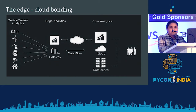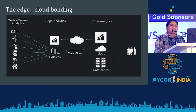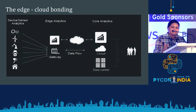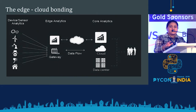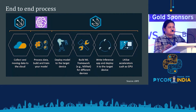Does edge computing make the cloud irrelevant? No — edge and cloud always work together. Edge computing does the necessary computation closer to the device and then pushes the rest of the information to the cloud. The cloud stores historical data so that we can use it later for training machine learning algorithms. This is a typical high-level end-to-end process.